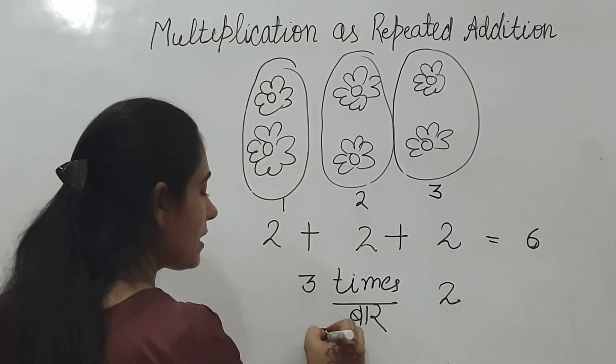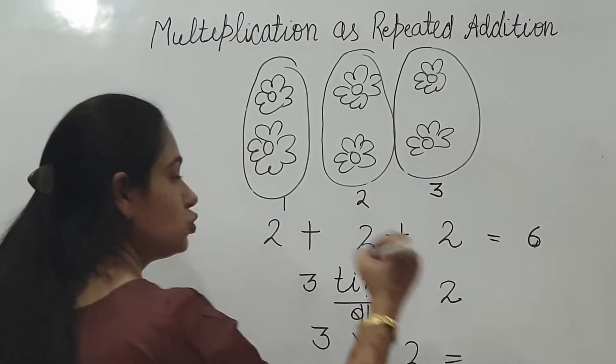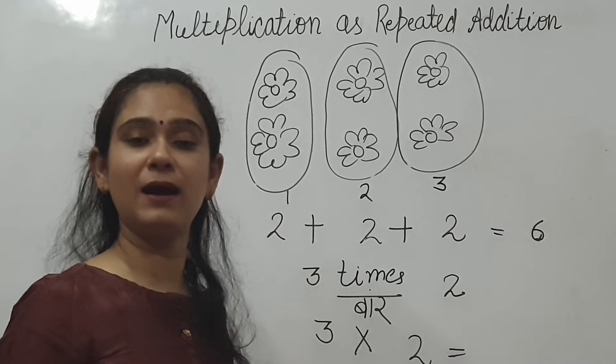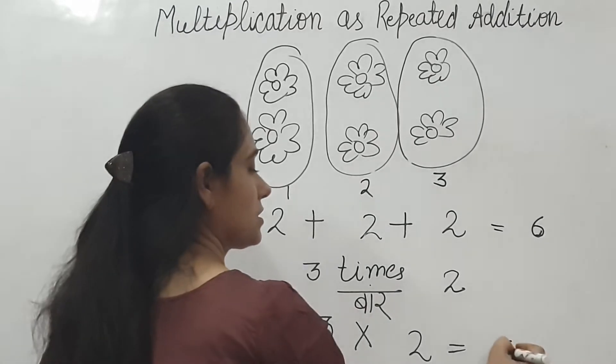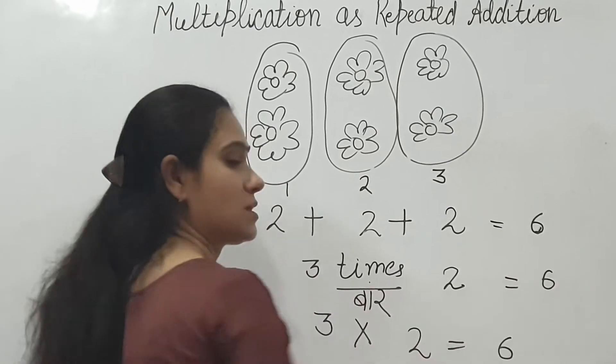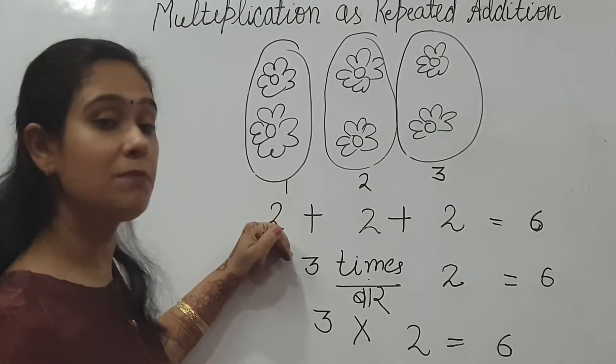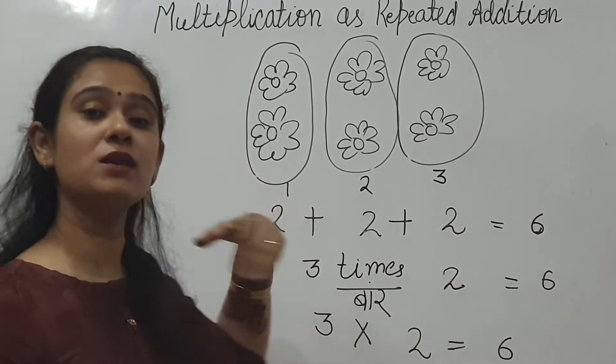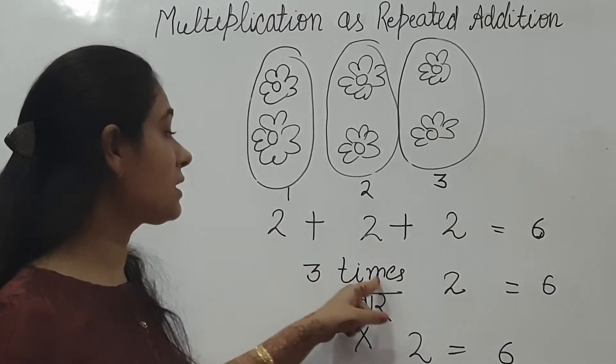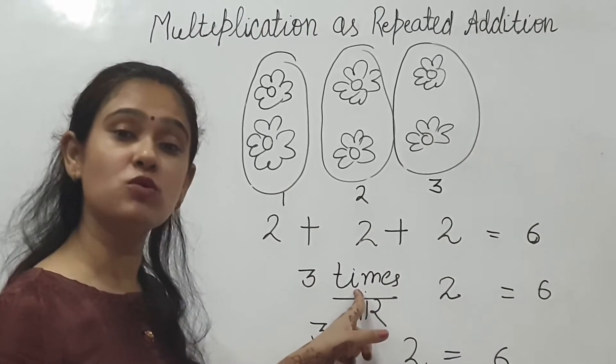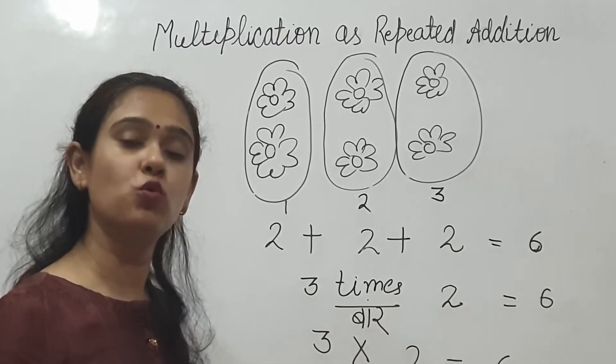Three times two. Now in math we write this as three multiply by two. Three multiply by two. Three twos are six. Six. So, three times. Did you see this? We did repeated addition. Same number of flowers are being repeated again and again. 3 times 2, we call our times multiplication sign.